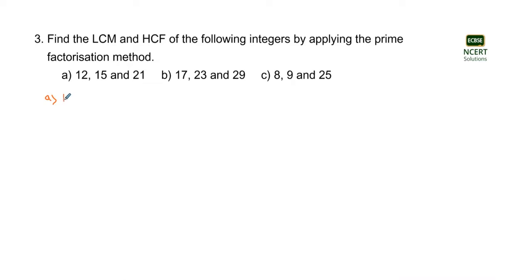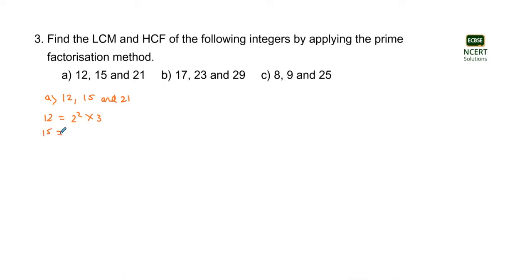In part A, the numbers provided are 12, 15, and 21. Starting with the number 12 and performing the prime factorization, 12 can be represented as 2 raised to the power 2 into 3. The number 15 will be equal to 3 into 5.